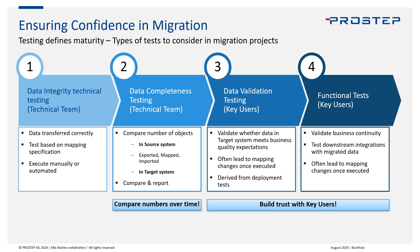The next two test types are about building trust with the key users. The first is data validation testing, which needs to be prepared and executed by the key users. Preparing these tests forces key users to really look into the new data model and new methodologies introduced in the new system, which will make them more confident. When executing data validation testing, it's about validating whether the data in the system meets the quality expectations key users have, and whether it's correct from a business perspective — not just matching the mapping specification, which can be wrong.